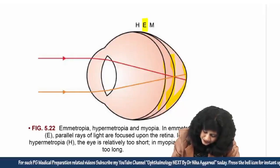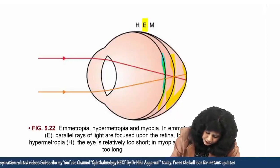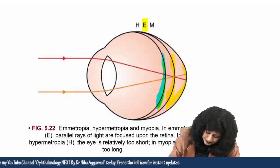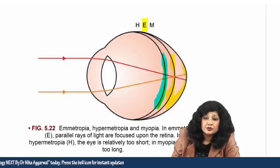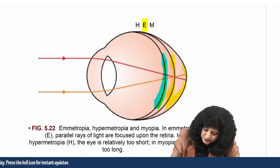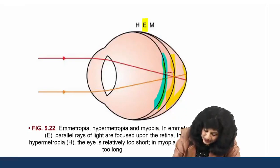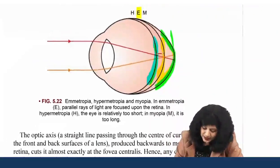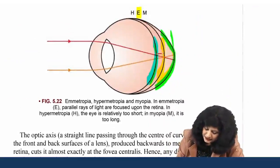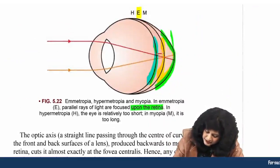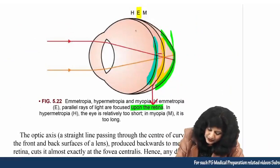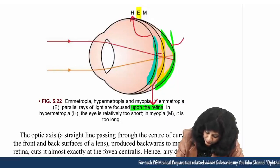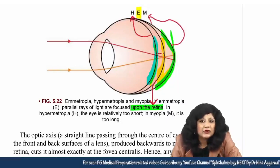In hypermetropia the eyeball is smaller — the image would form posterior to the retina. In myopia the eyeball is large, so in the large eyeball the image forms in front of the retina. In emetropia parallel rays of light are focused upon the retina; in hypermetropia the eyeball is very small; and in myopia it is very long.